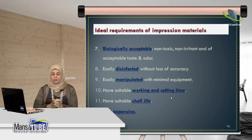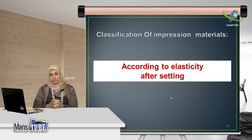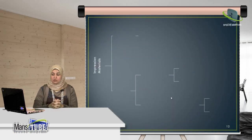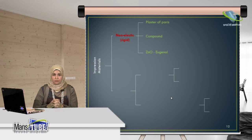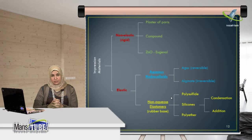For classification of impression materials, the most important way is the classification according to elasticity after setting. Impression materials are classified into two groups: non-elastic (rigid) impression materials and elastic impression materials. For non-elastic materials, we have plaster of Paris, compound, and zinc oxide eugenol impression material.